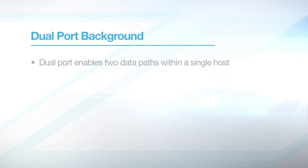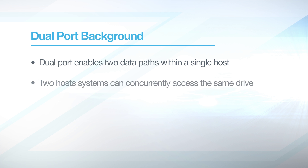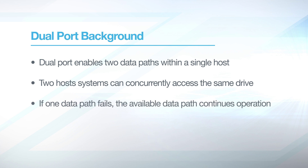Dual port enables two data paths within a single host so that two controllers can access the same storage device for redundancy. In another usage, two host systems can concurrently access the same drive with dual port. If a system failure or power loss occurs where one data path is lost, the available data path continues operation as if no failure had occurred, with minimal impact to quality of service.